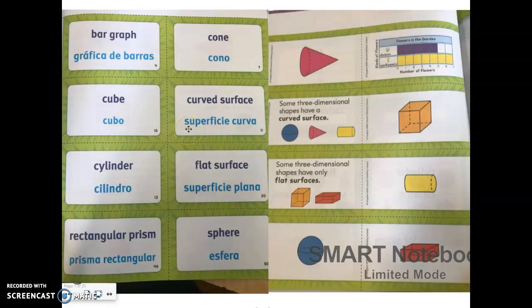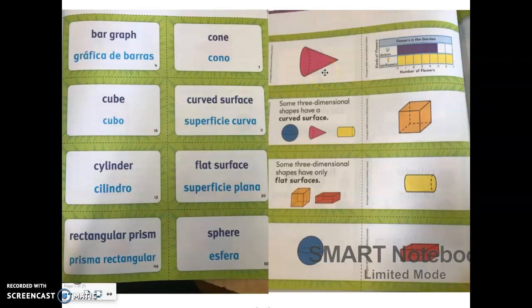Hello boys and girls. Now that you've watched the Brain Pop video, there are just a few things we need to talk about. One of them being curved surface. A lot of places, like the video and in other charts, refer to curved surface as round. So when you see curved surface or round surface, that just means it doesn't have an edge and it's not flat, just like this cone here. This side of the cone is a flat surface — it's the shape of a circle — but all around it is a round curved surface.